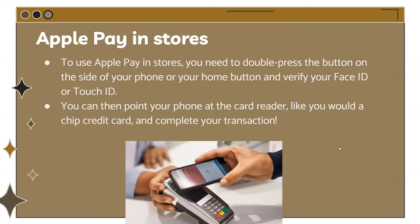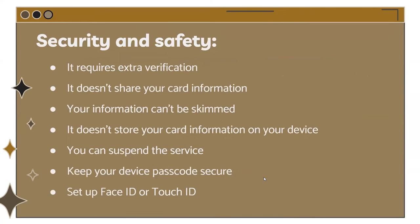Here's how to use Apple Pay in stores. Double-press the button on the side of your phone or your home button and verify with Face ID or Touch ID. Then point your phone at the card reader, just as you would tap with a credit card — just as shown in the photo — and it will complete your transaction.